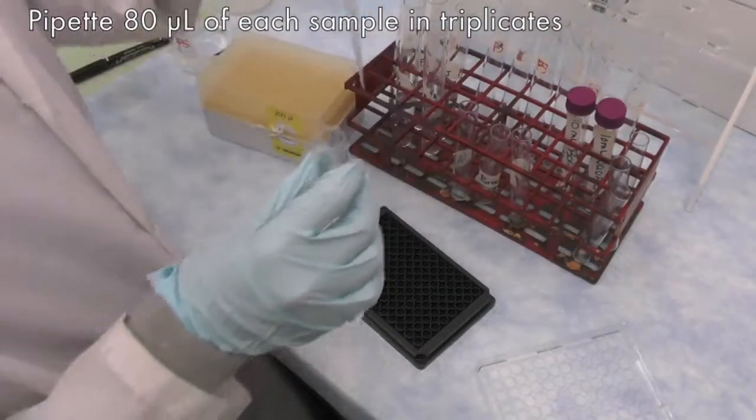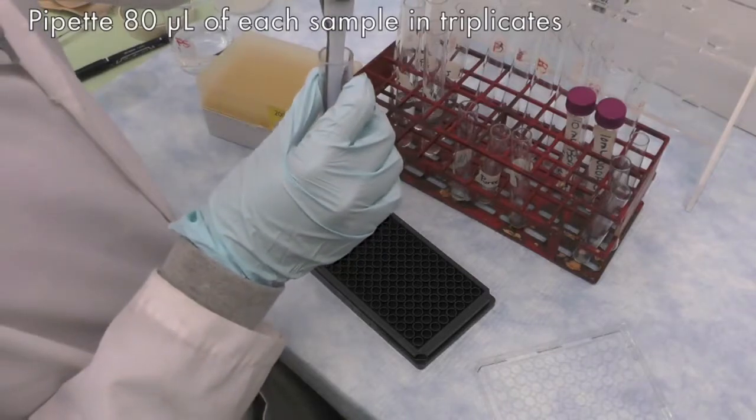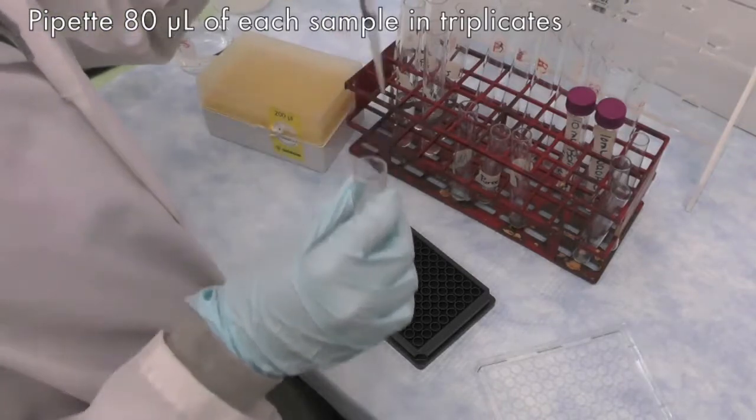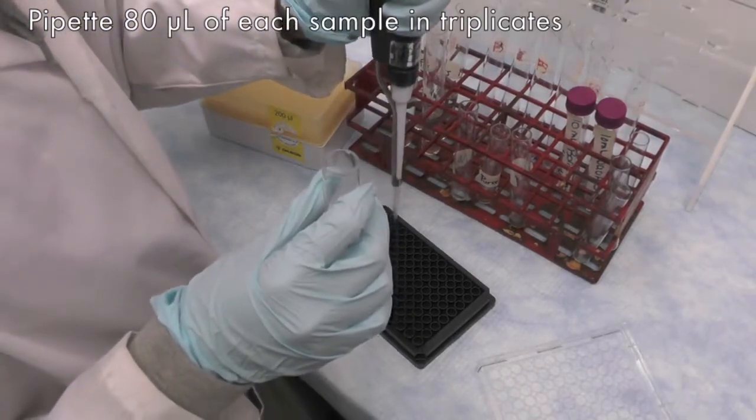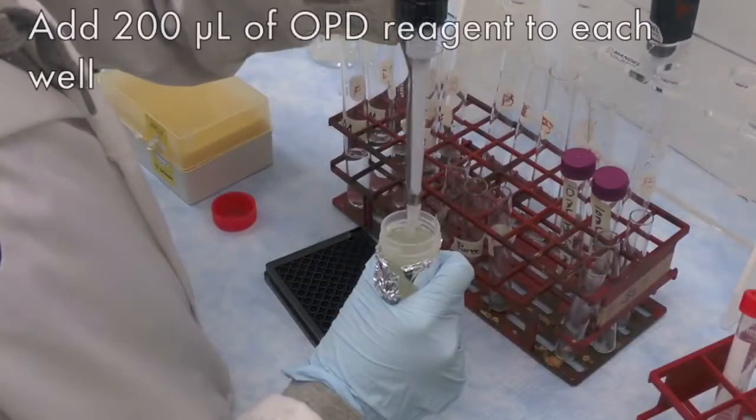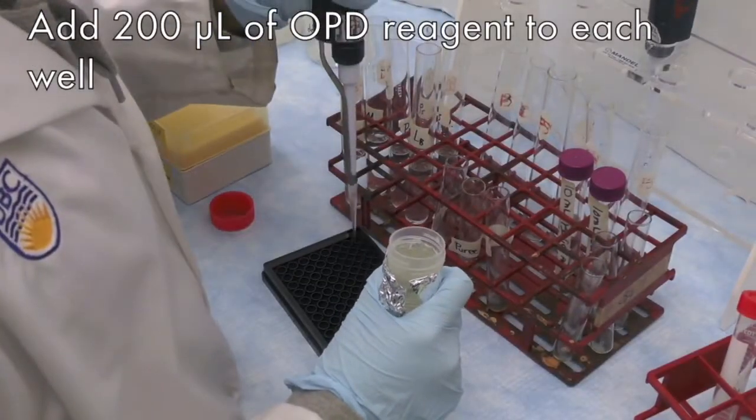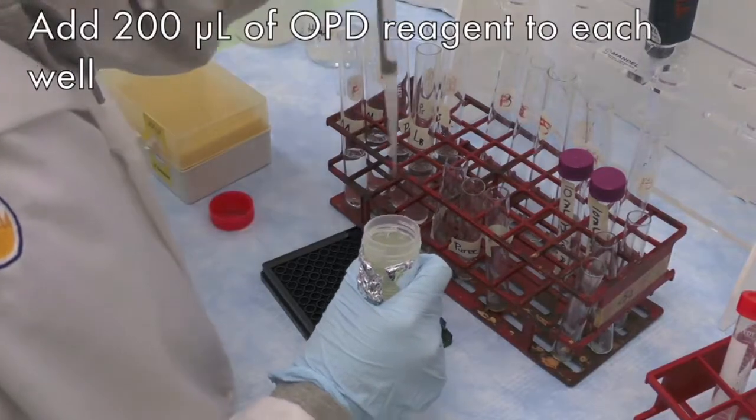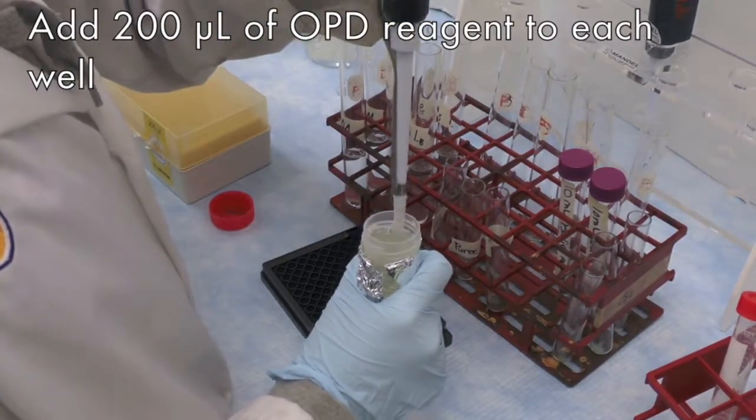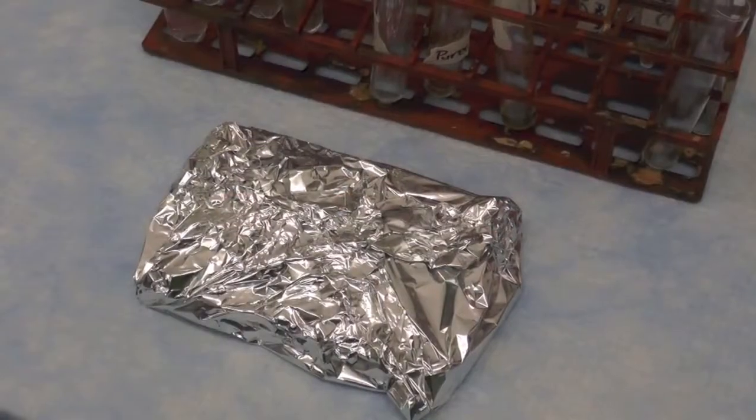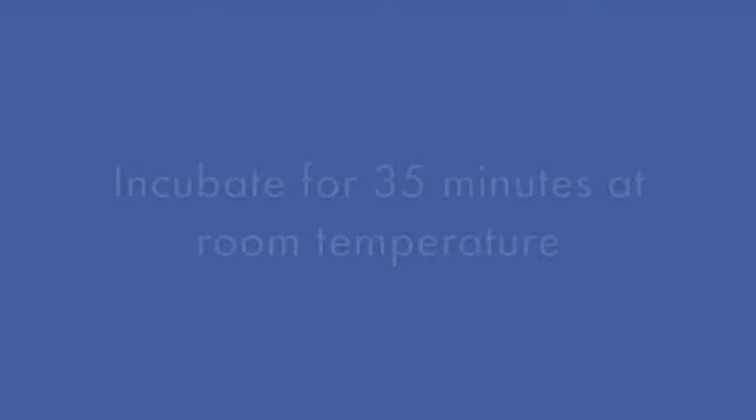For the sample blanks and sample dilutions, pipette 80 µl of them into the microplate in triplicates. Add 200 µl of OPD reagent into each well containing solutions. Then cover the plate with aluminum foil and incubate for 35 minutes at room temperature.